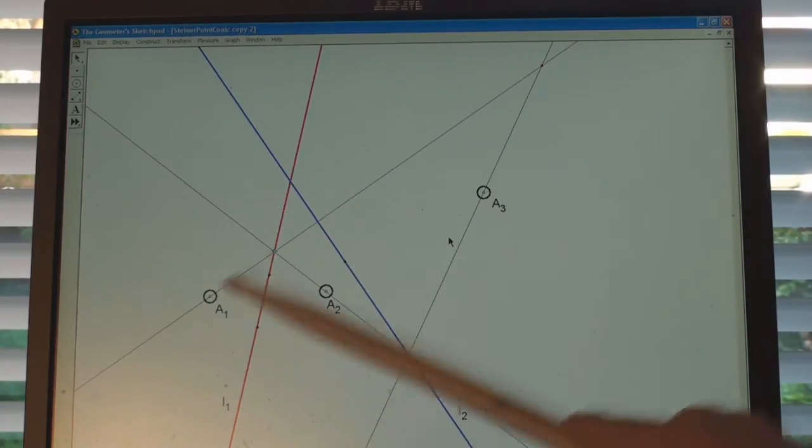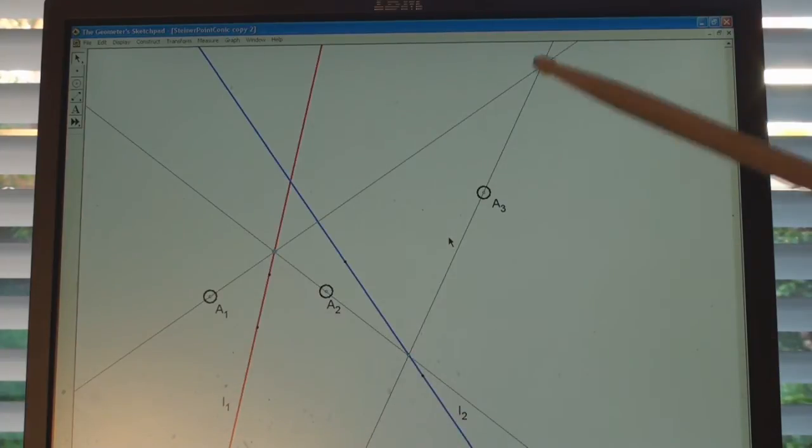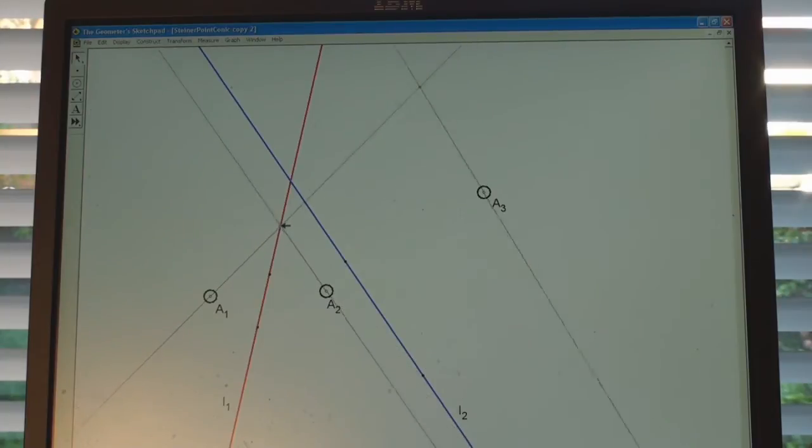And now to get a conic, what we do is we look at the intersection of those two lines. Just as we looked at the join of two points before, now we look at the intersection or the meet of these two lines. And this point up here, we look to see where it goes as we move this point. Can you see what it's doing?